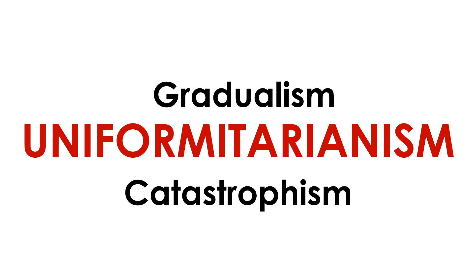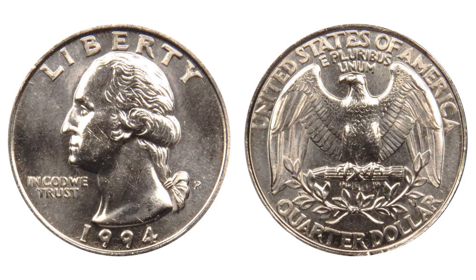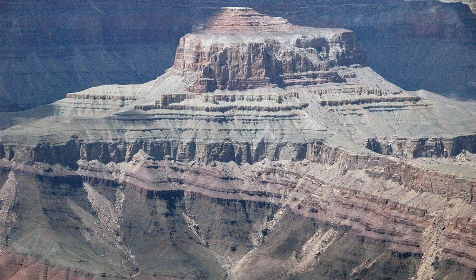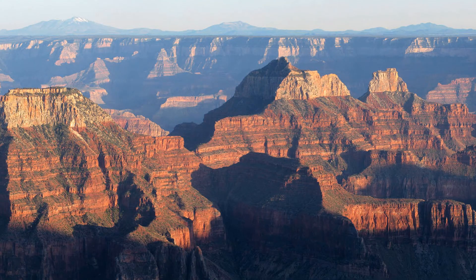At first glance, gradualism and catastrophism seem diametrically opposed, but they are simply extreme opposite views of how our planet has come to be — two sides of the same coin. The Earth today is a reflection of slow continuous processes as well as short-lived events that seem catastrophic in comparison. Let's return now to the rocks. The study of Earth history is based on six principles, which serve as the foundation for all work in sedimentary geology, including both sedimentology and stratigraphy.